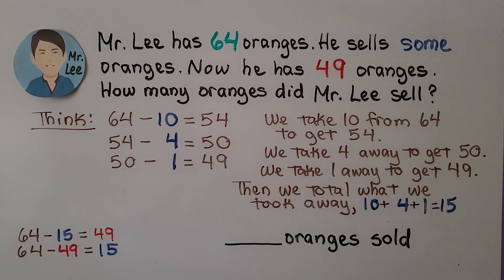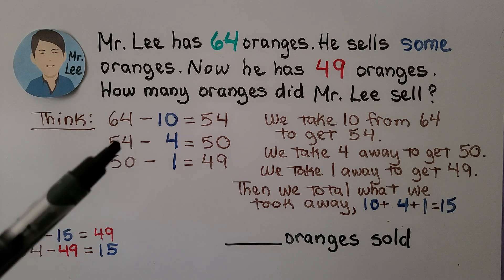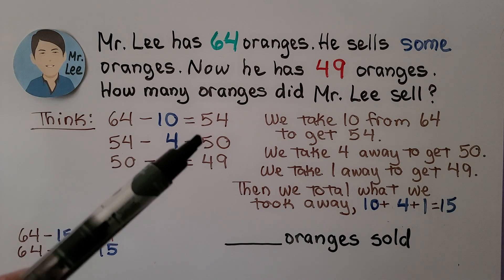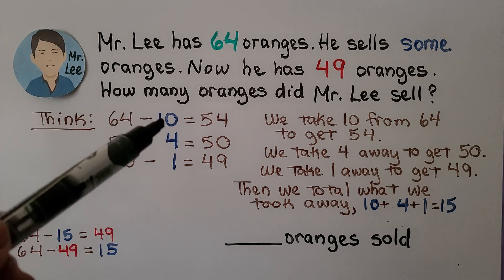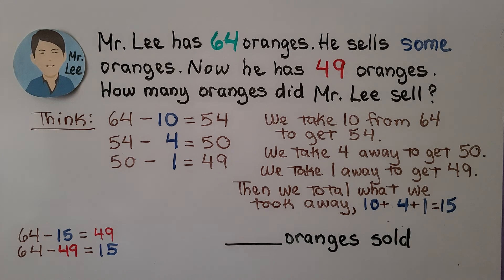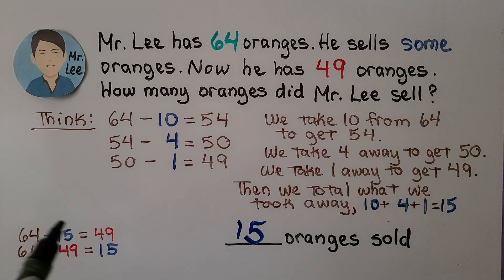Mr. Lee has 64 oranges. He sells some oranges. Now he has 49 oranges. How many oranges did Mr. Lee sell? We take 10 from 64 to get 54. Then we take away 4 more to get to 50, a tens number. We need to get to 49, so we take away one more. We took away a 10, a 4, and a 1 — we took away 15. So he must have sold 15 oranges. 64 minus 15 is equal to 49, and 64 minus 49 is equal to 15. If we add 15 and 49 together, it should equal 64.